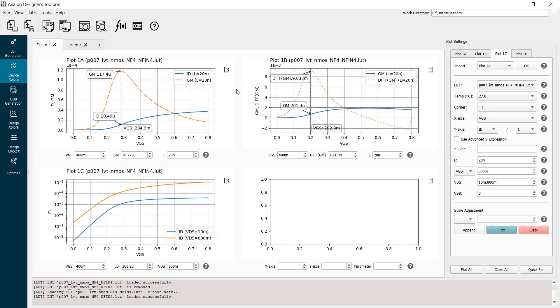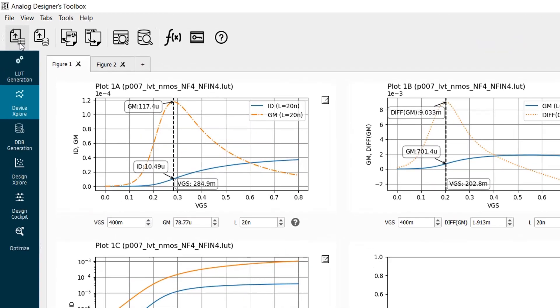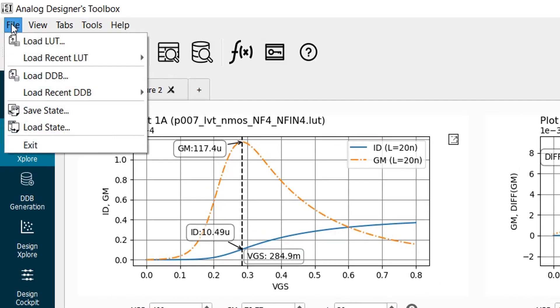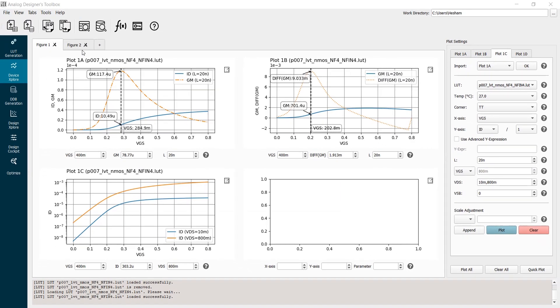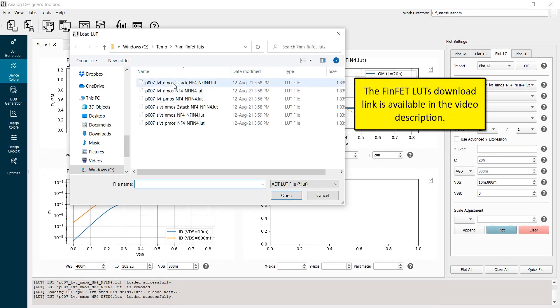We can repeat this procedure for different types of devices. I can load more LUTs here from the toolbar or from the menu bar. As you can see here, I have more LUTs. I have an LUT of a two transistor stack, two LVT devices stacked vertically. And I also have an LUT for an NMOS super low VT device and a stack of two super low VT devices.